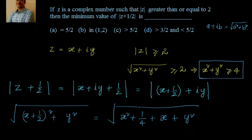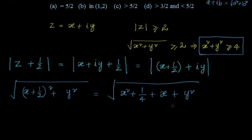Now, for this expression we have to find out the minimum value. We know that x² plus y², together, has a minimum value of 4. The 1/4 term is a constant. The only remaining concern is the minimum value of x. For that, we go back to the condition x² plus y² is greater than or equal to 4. The minimum value of x will occur when we take y equal to 0.